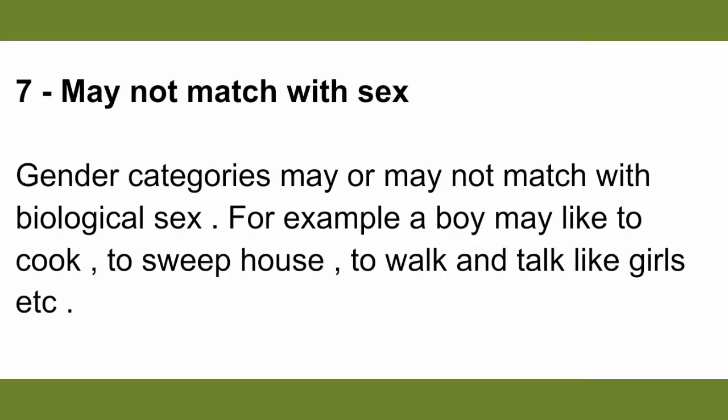The seventh characteristic is that gender may not match with sex. A boy might like to do traditionally feminine things or have feminine traits — his interests may differ from other men's, and he may prefer activities like sweeping the house or talking and walking like girls. Similarly, many girls have masculine traits. Therefore, sex and gender are both different from each other and not necessarily associated.